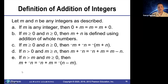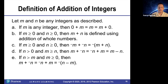If n is greater than m and m is greater than or equal to zero, then m plus negative n is the same thing as the opposite of n minus m. For example, two plus negative five should be the opposite of five minus two, which comes out to negative three.